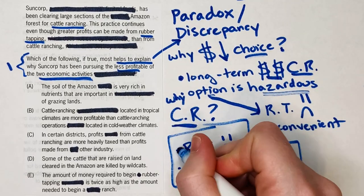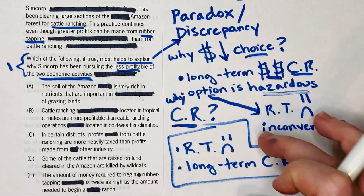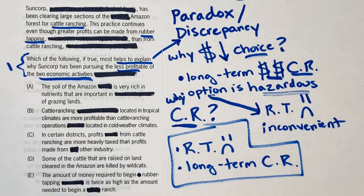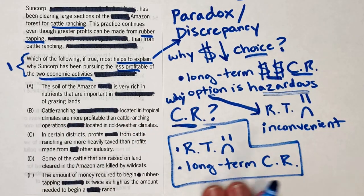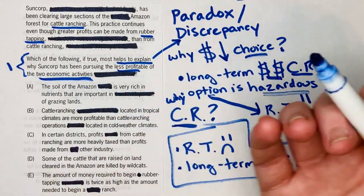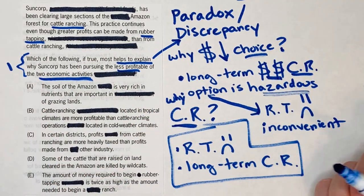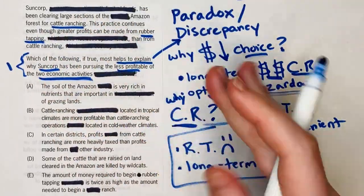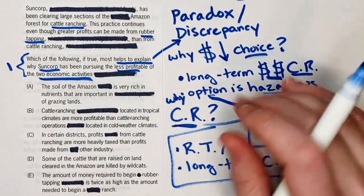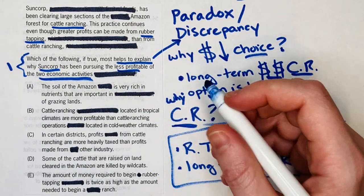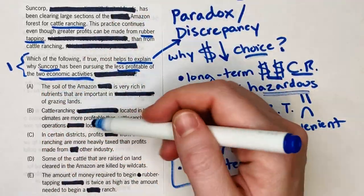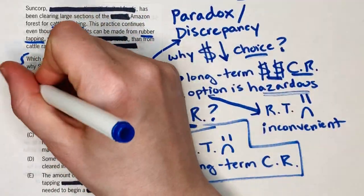That's a nice concise prediction, and now we're ready to look at the answer choices. Answer A says the soil of the Amazon is very rich in nutrients that are important in grazing lands. That's not really telling me a long-term benefit of cattle ranching. We don't even know if Suncorp cares about the land itself — they seem to only care about profits. So why they would care about the grazing lands is irrelevant.